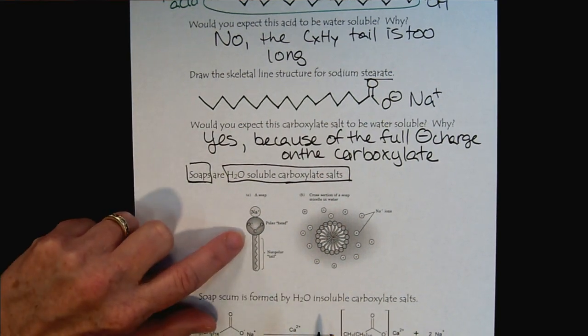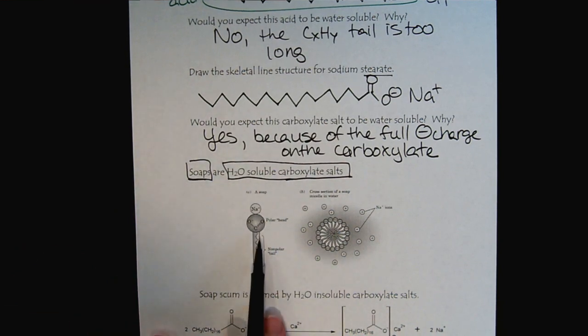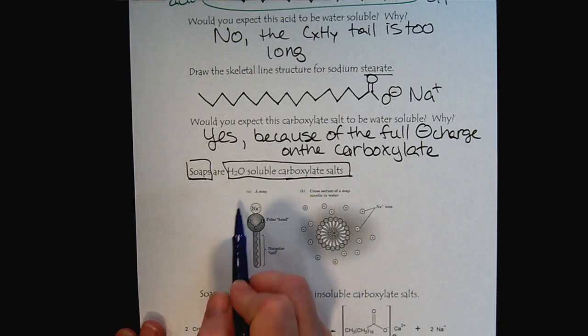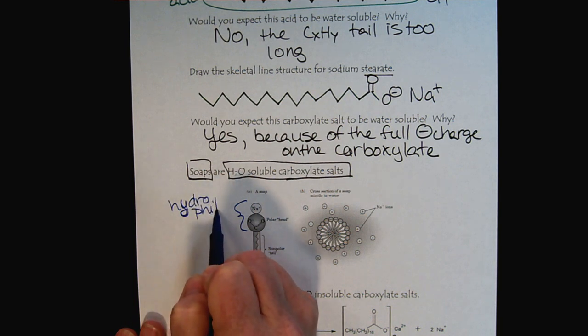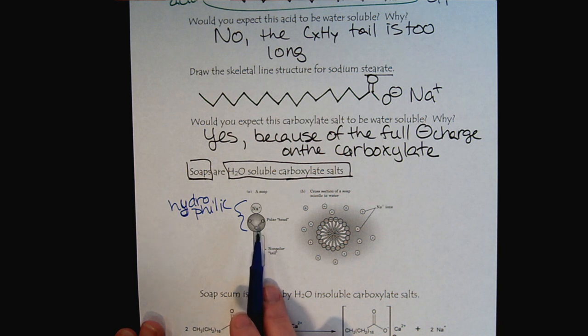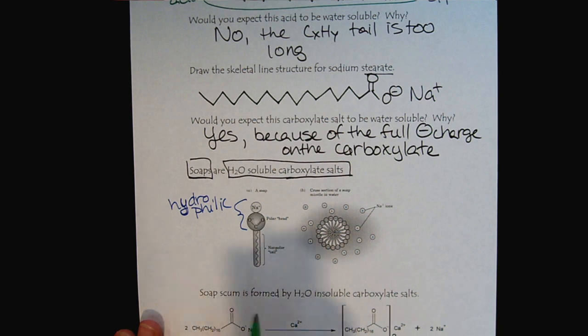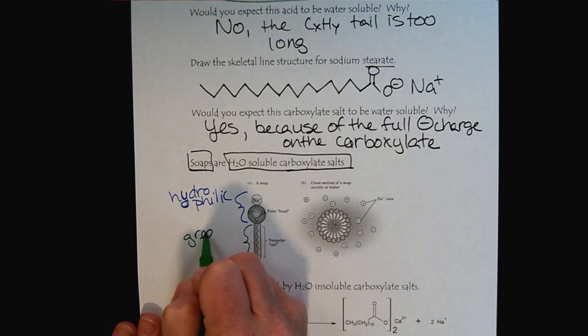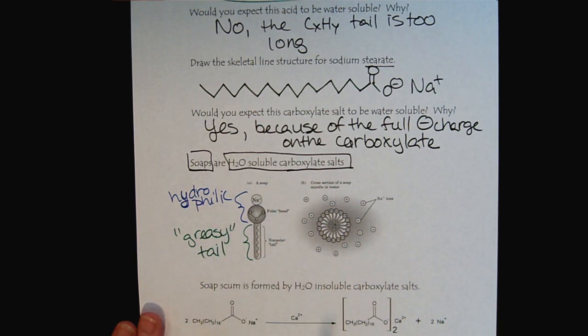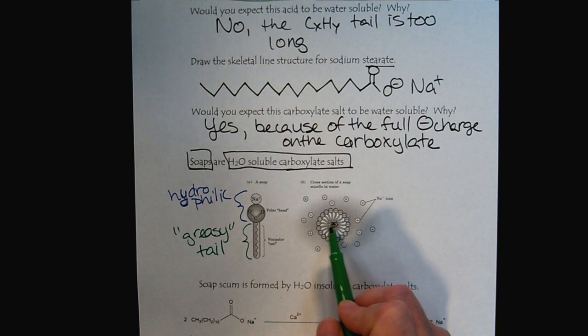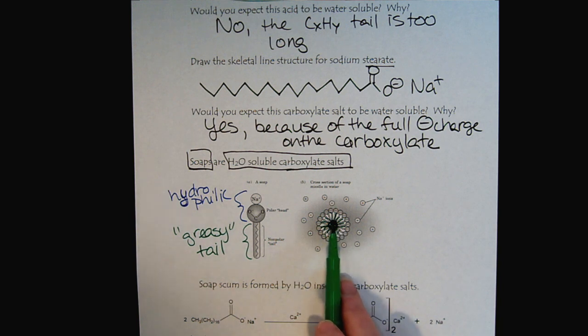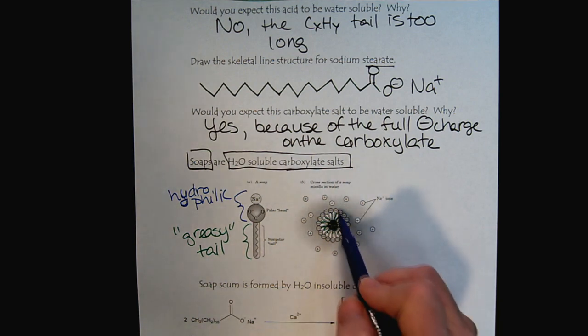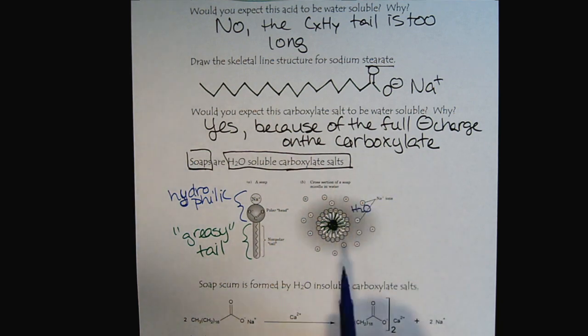So soaps are water soluble carboxylate salts. So here we have a diagram representing, here's the polar head and then the non-polar tail. So this polar head is going to be hydrophilic and enough that it creates the water solubility. So how do soaps get us clean? Well, there still is this non-polar greasy tail. And so let's say that we have a greasy stain on our clothes. The non-polar hydrophobic tails want to interact with the grease via the London force. But the polar heads all want to interact with the water.